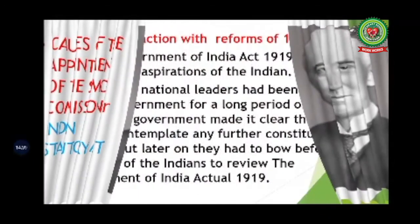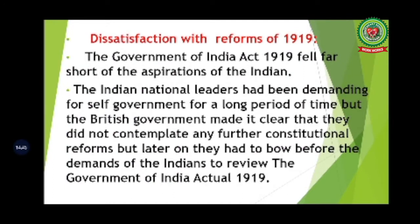The causes of the Simon Commission: First, dissatisfaction with the Government of India Act 1919, which fell far short of the aspirations of Indians. Indian national leaders had been demanding self-government for a long time. The British government initially made clear they did not contemplate further constitutional reforms, but later had to give way to Indian demands to review the Government of India Act. People were not happy with the Montague-Chelmsford Reforms as the diarchy system was ineffective.